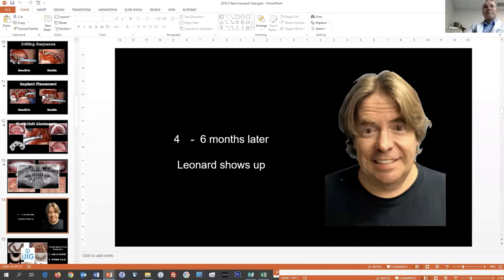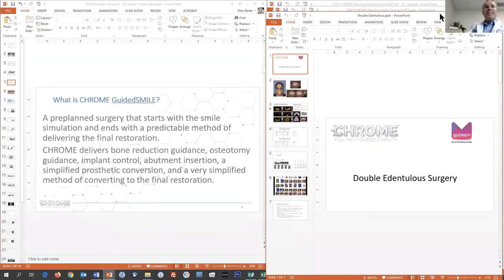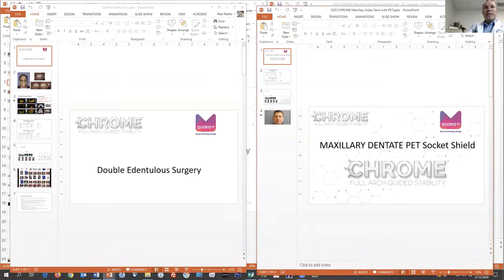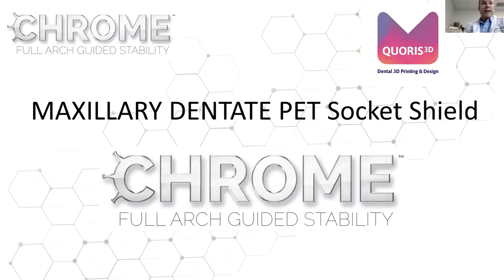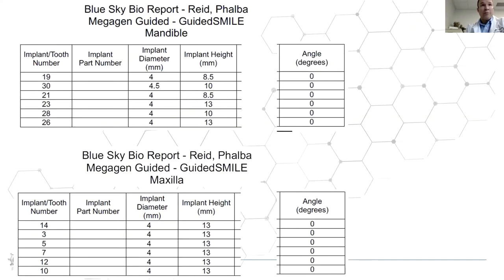I'm going to save the double edentulous case for last since it's the least common patient type. The next case is by Dr. Towel — a maxillary dentate case with PET, or partial extraction therapy. Socket shield, or partial extraction therapy, is becoming quite popular in Europe and here too, especially for full arch cases where you can control the buccal plate and hopefully long-term bone — particularly when delivering an FP1 prosthetic.